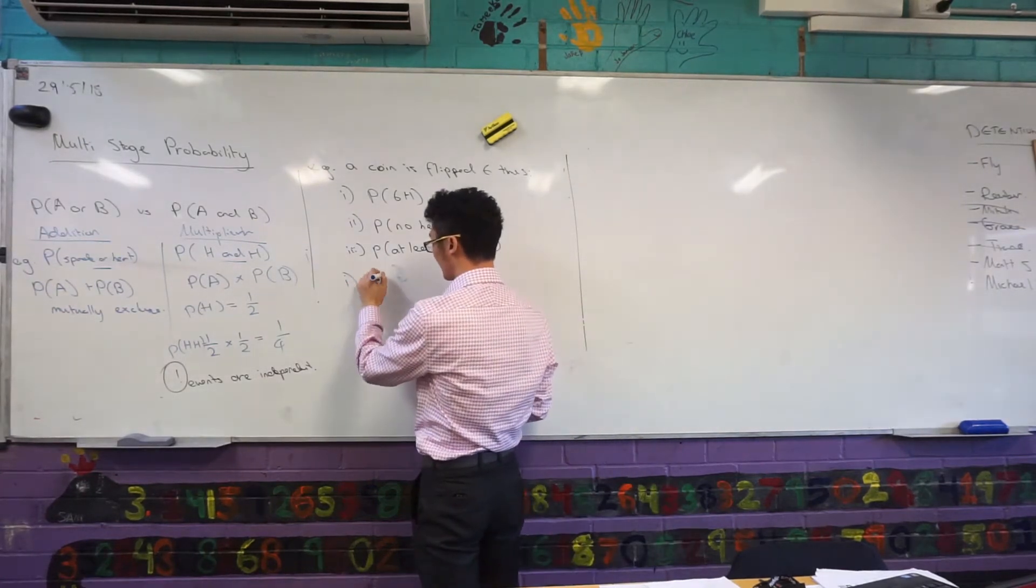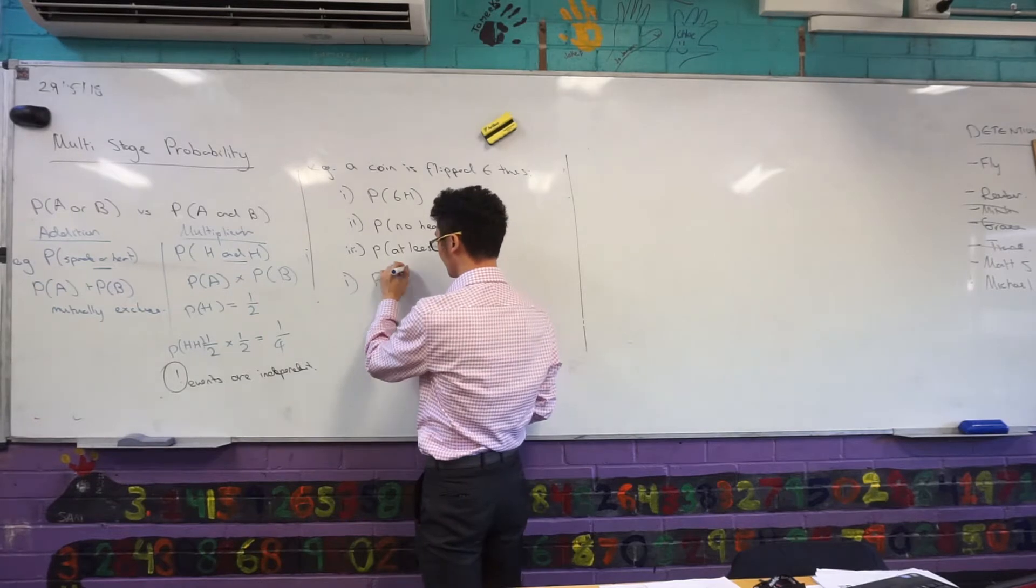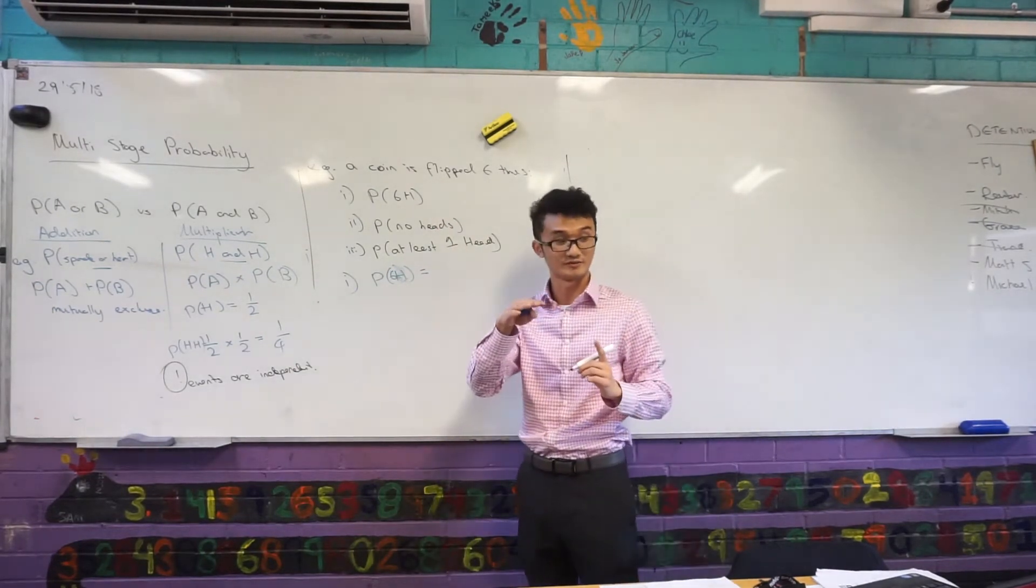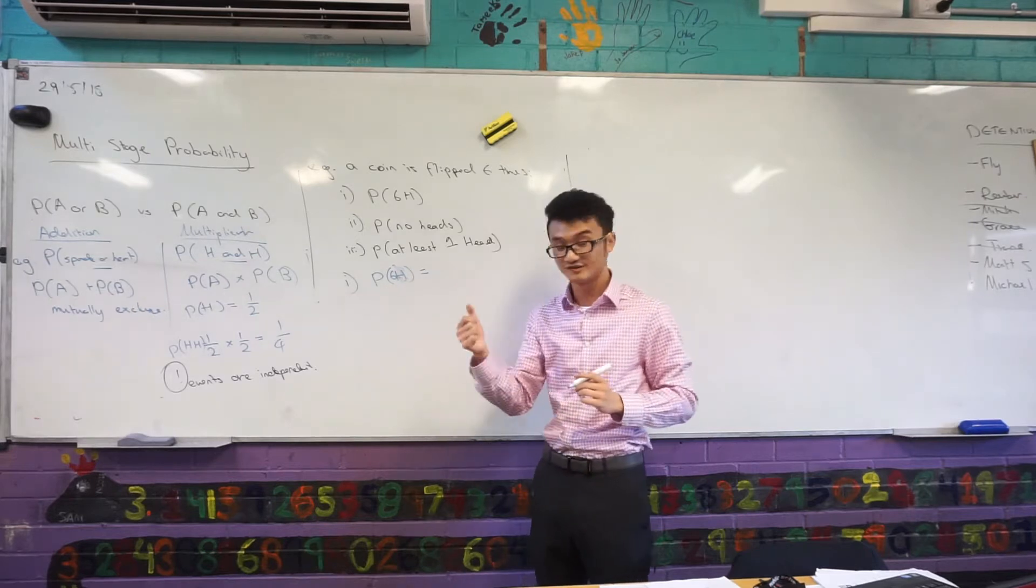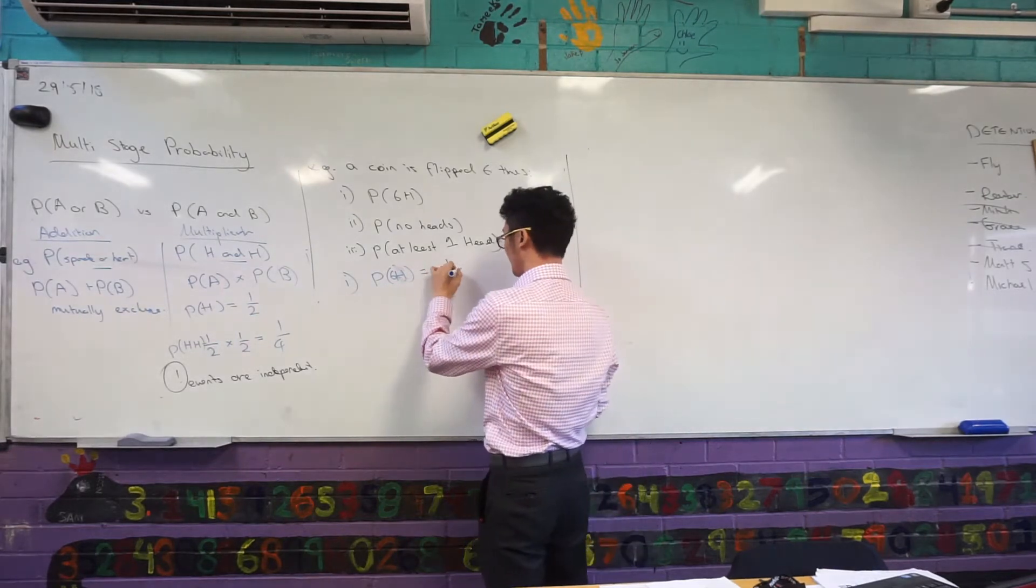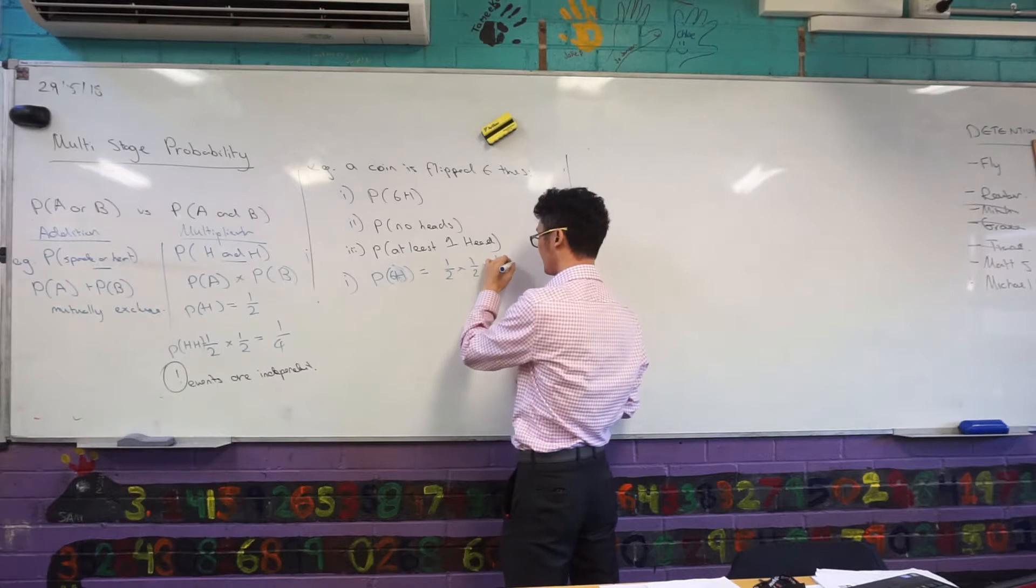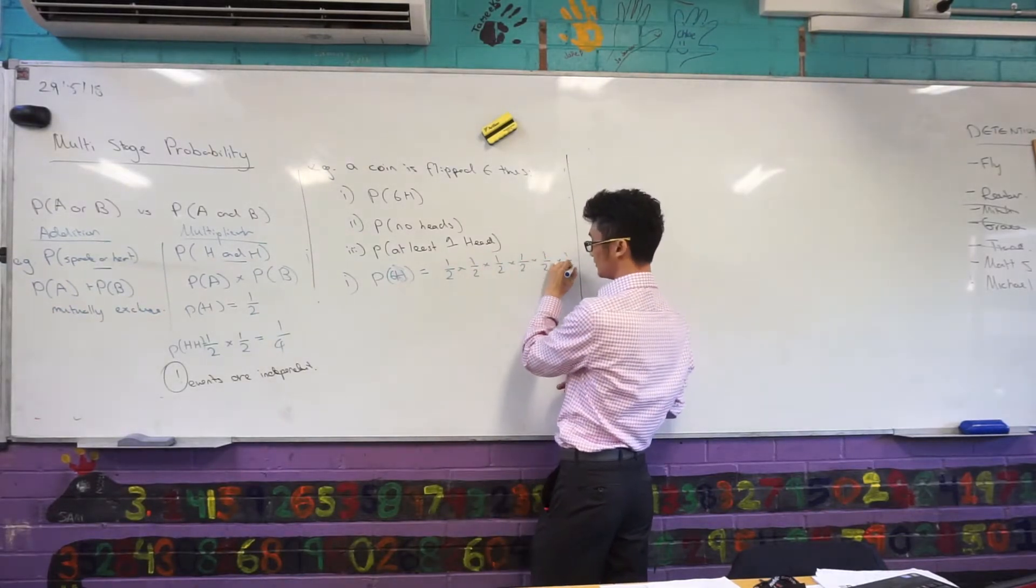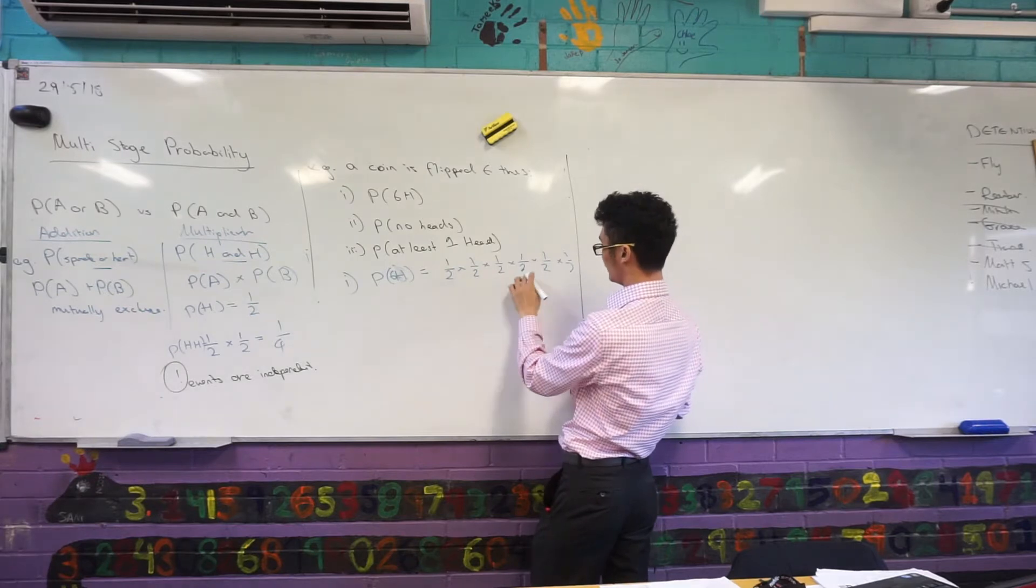I could say that, let's write it out. So P of head, six heads - one sec, slow down, just wait here. The probability of flipping head six times would be half times half times half, and it's important that you do times half times half times half - one, two, three, four, five, six.